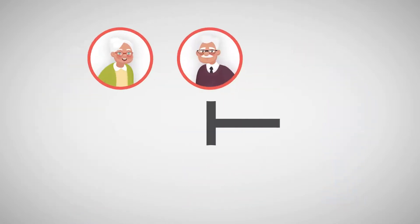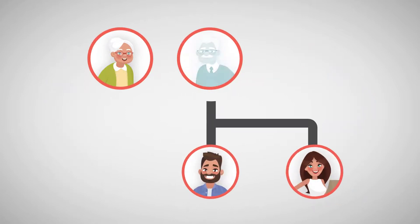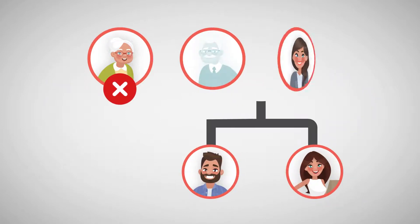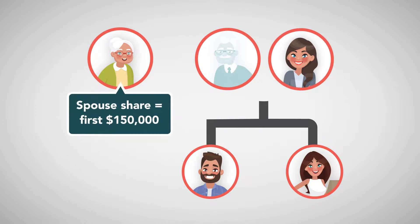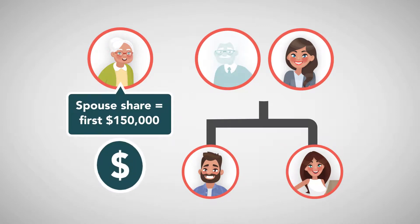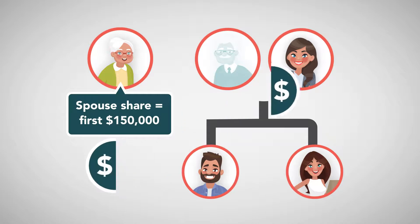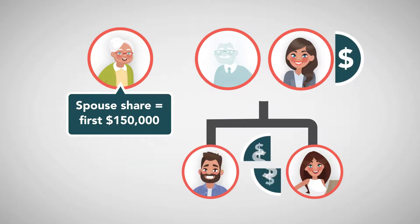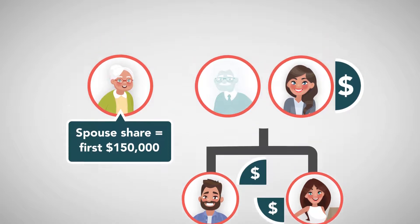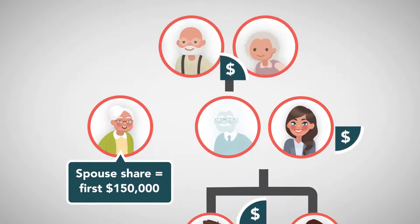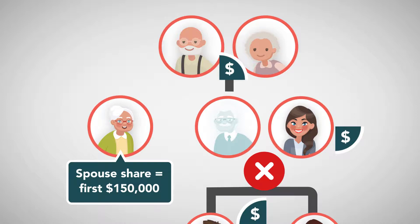If there are living children but they are children of the deceased person only and not the spouse, as in the case of a second marriage, under the code the spouse's share is the first $150,000, with the remainder to be split one half to the surviving spouse and the other half amongst the children. Under the code, living parents of the deceased person may be entitled to a small share of the estate if the deceased person died without living children but with a living parent.